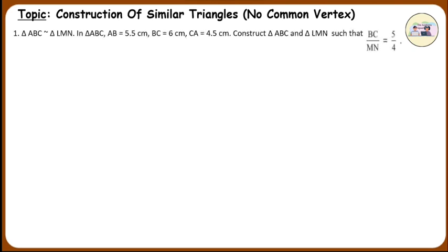Triangle ABC is similar to triangle LMN. In triangle ABC, AB is equal to 5.5 cm, BC is equal to 6 cm, CA is equal to 4.5 cm. Construct triangle ABC and triangle LMN such that BC upon MN is equal to 5 upon 4. Before constructing the triangles, let's find the length of the three sides of triangle LMN.